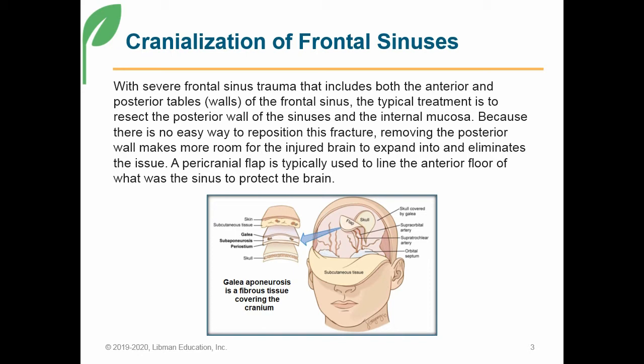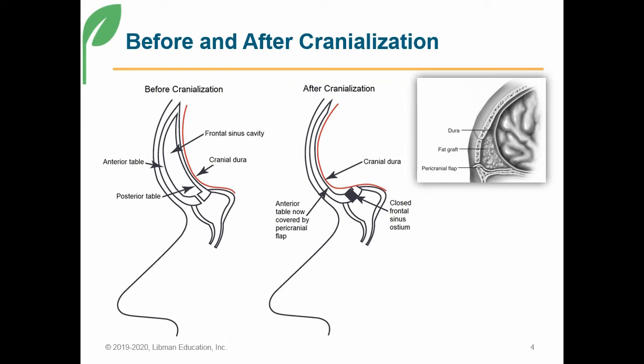In doing this, a pericranial flap is typically used to line the anterior floor of what was the sinus to protect the brain. It might be helpful to look at a drawing of the before and after. This procedure is called a cranialization because it means making more room inside the cranial cavity. The picture on the left shows before the cranialization — there is a complete frontal sinus cavity and the dura lines the inside of the regular cranial cavity.